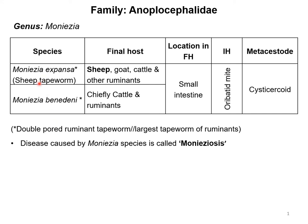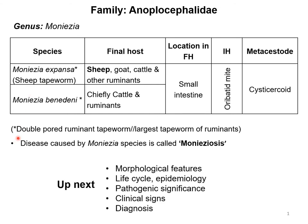We will talk about two major cestodes of the ruminant: Moniezia expansa and Moniezia benedini. Moniezia expansa is also known as the sheep tapeworm because this parasite is mostly found in sheep, but can also be found in goat, cattle, and different other ruminant species. Moniezia benedini is mostly found in cattle but can also be found in other ruminants.